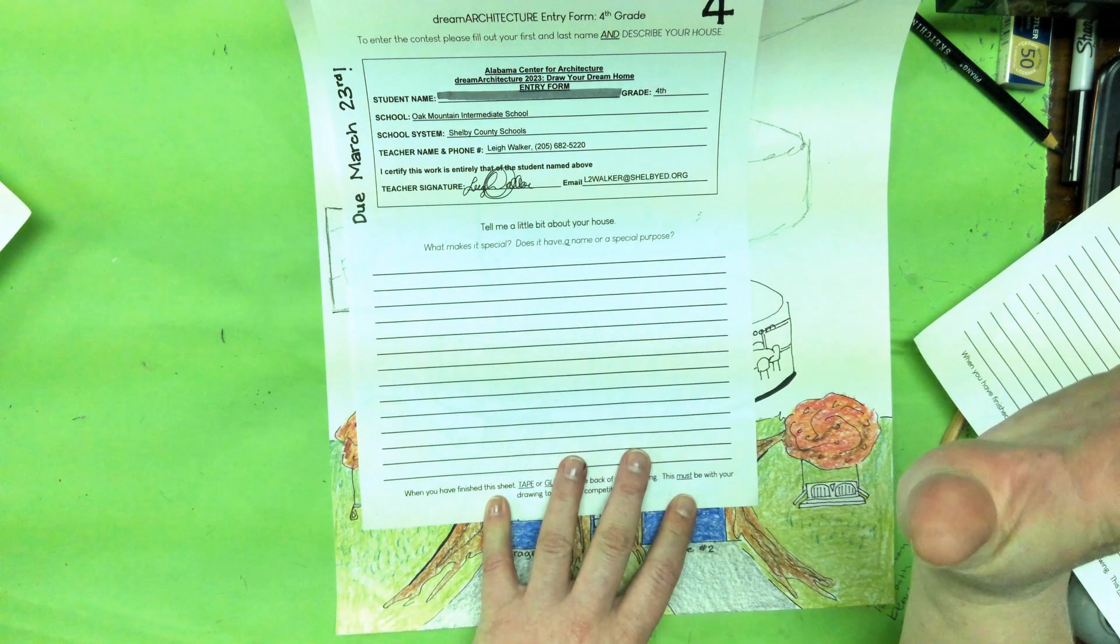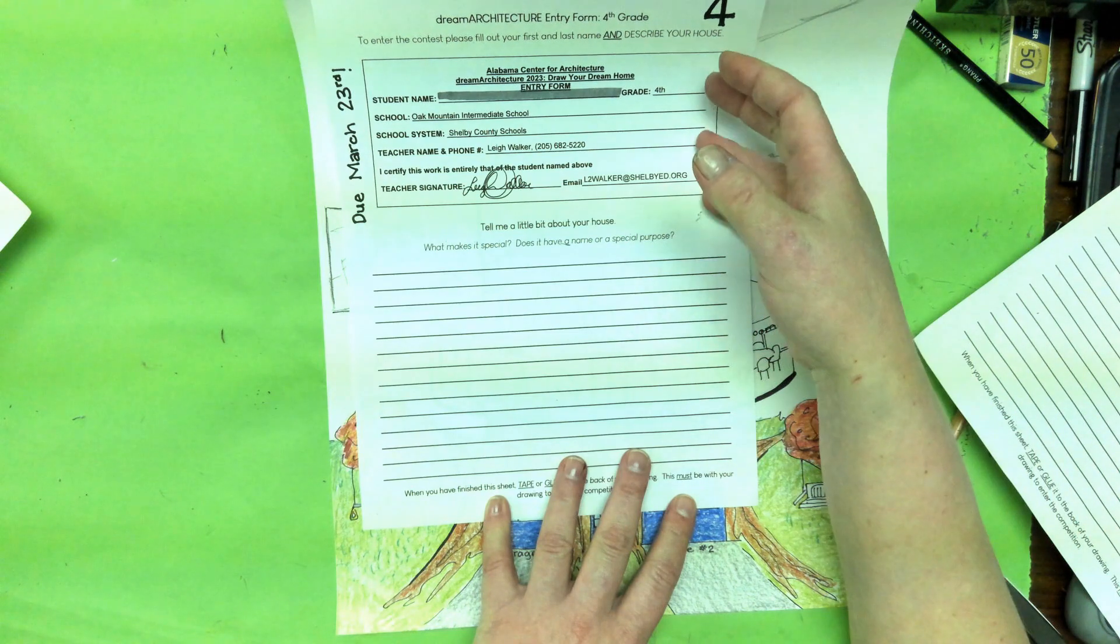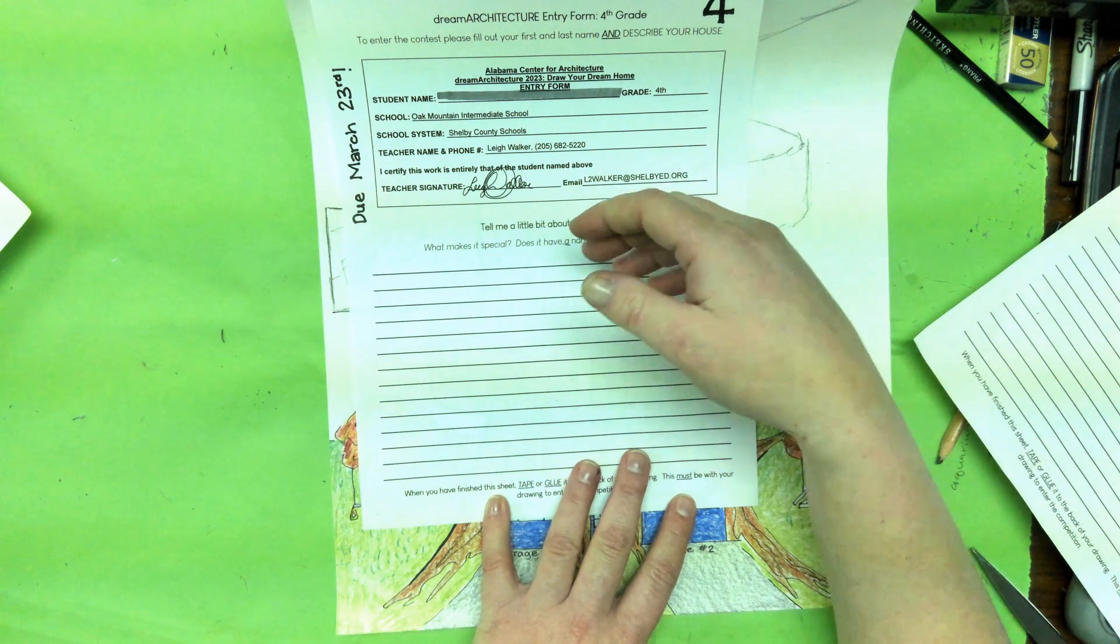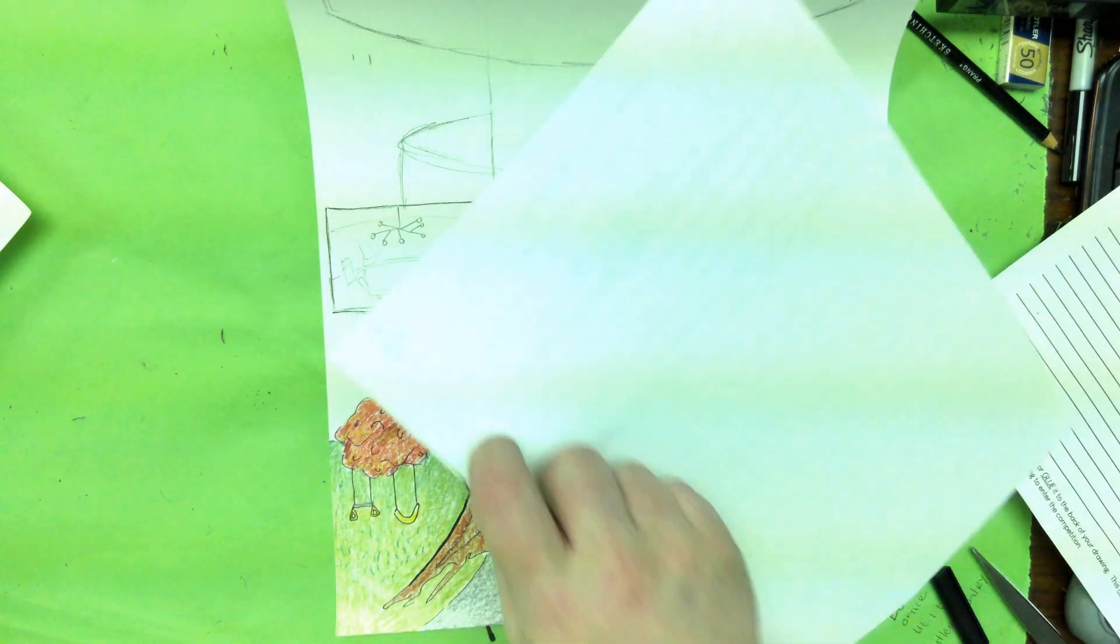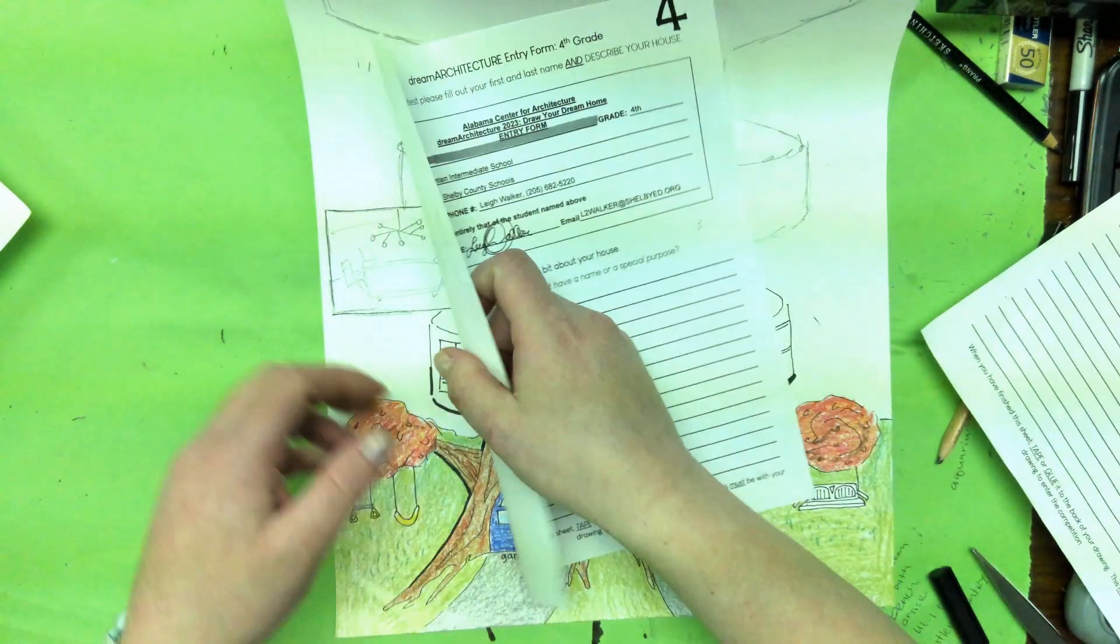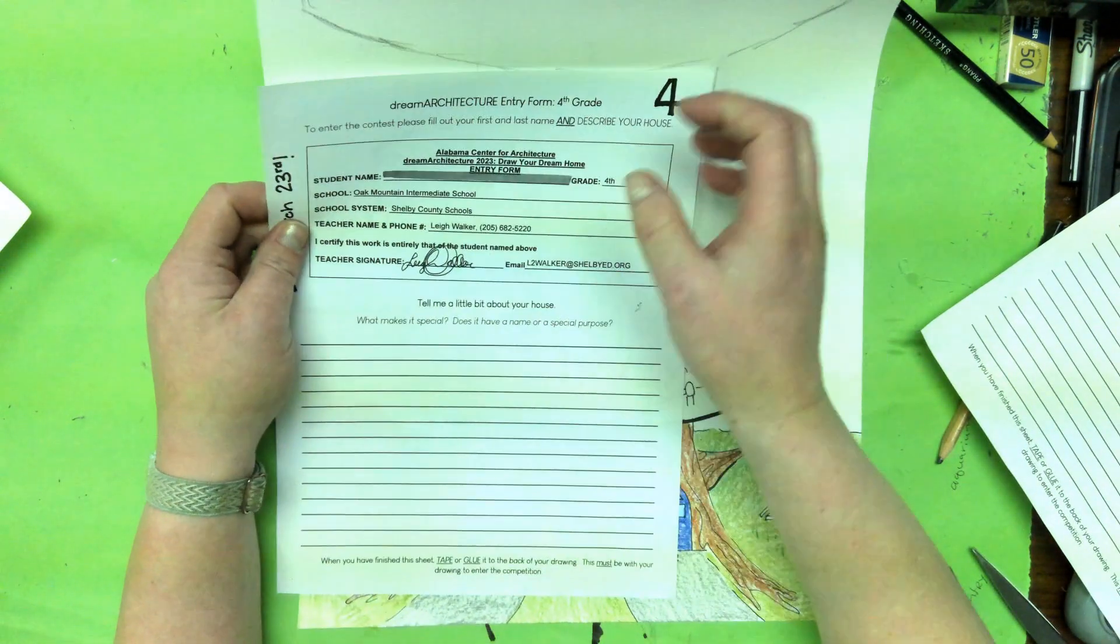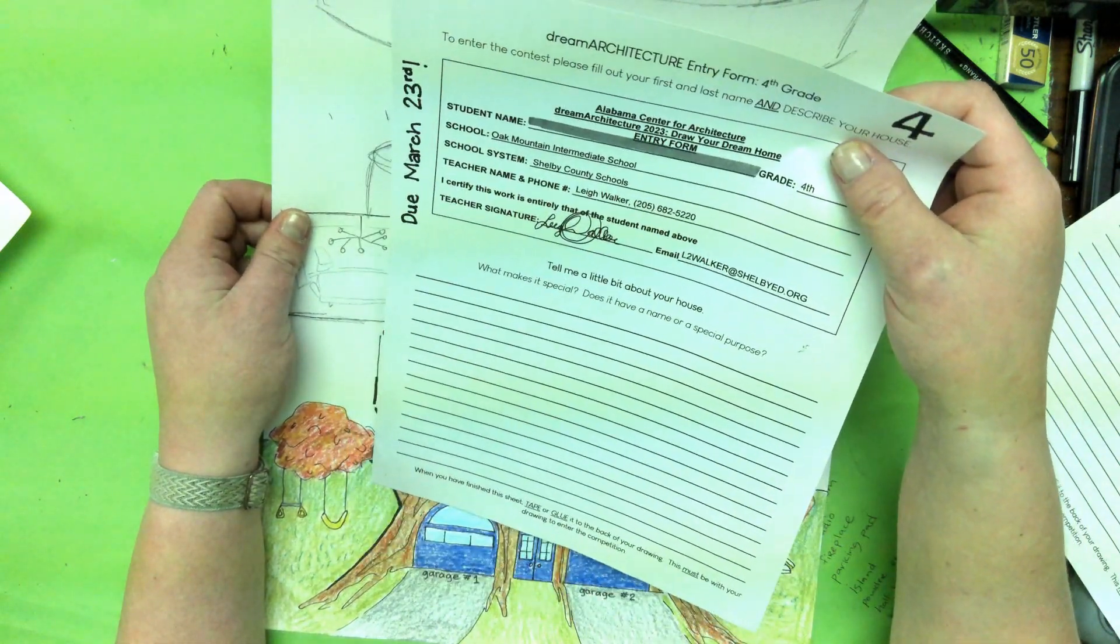So it might just be a couple of sentences. Or you may be one of my friends who's got a lot to write. So maybe you fill this all up and then you turn it on the back and write some. That's totally fine. When you bring it back by March 23rd, you're going to either tape or glue this on the back of your paper.